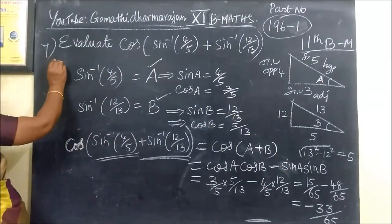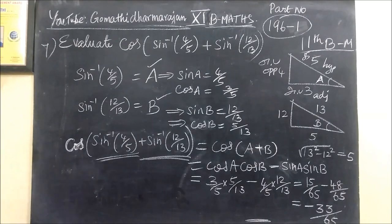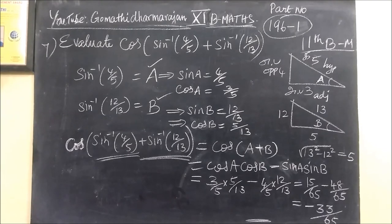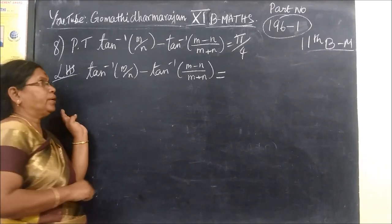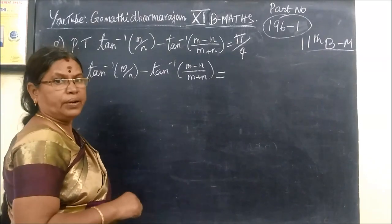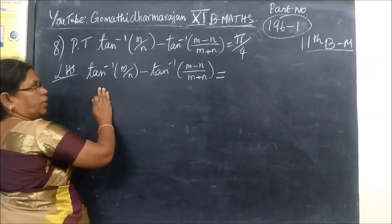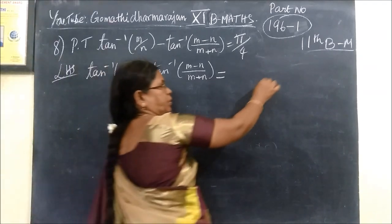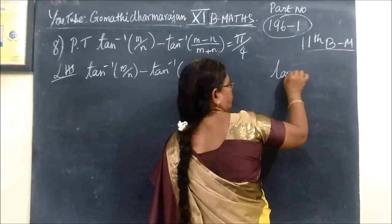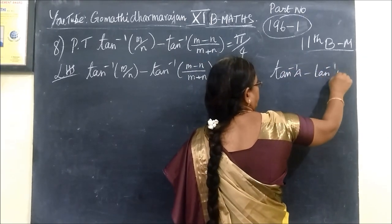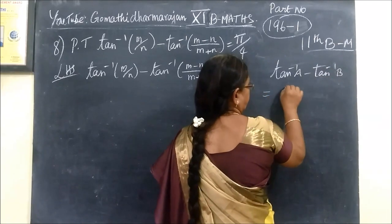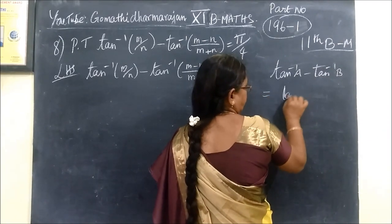Now we can do question number 8. Prove that tan inverse m by n minus tan inverse m minus n by m plus n equal to pi by 4. We know the formula tan inverse A minus tan inverse B.